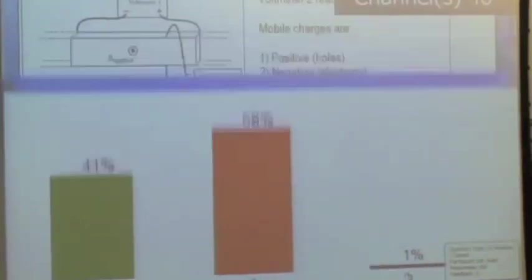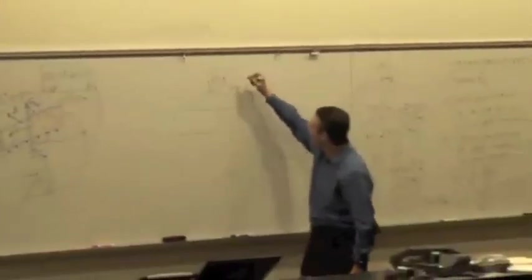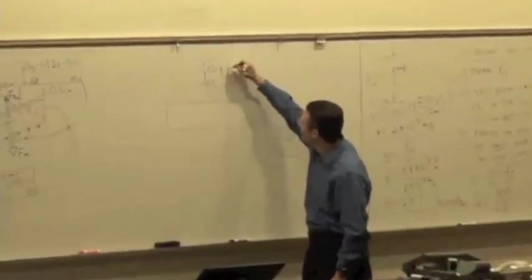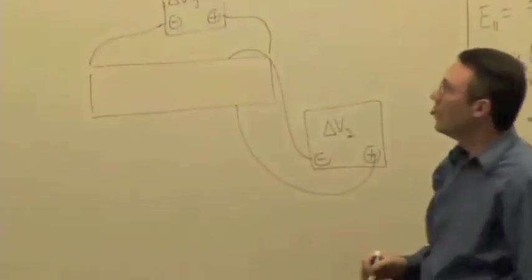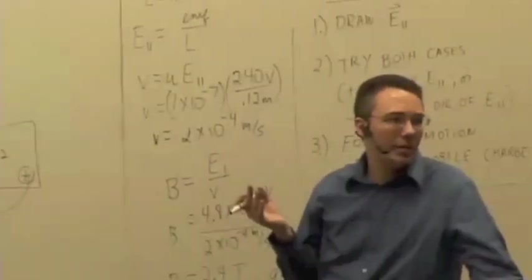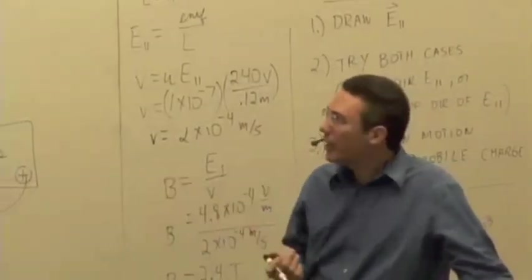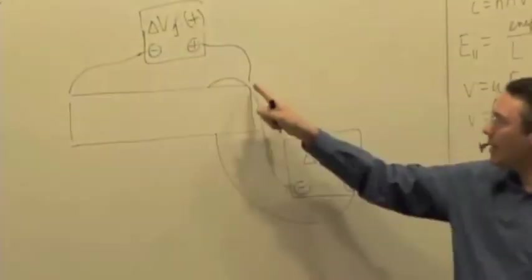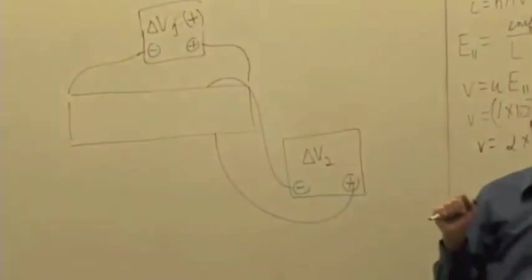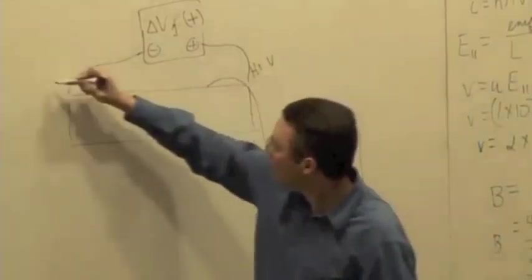Bare majority for answer number 2. So how would you figure this out? The first thing you have to figure out is the direction of E parallel. We're told something about the voltmeter reading — it is positive. The rule for a voltmeter: if the positive terminal is connected to the higher potential, it reads positive. This is reading positive, so which end is at the higher potential? The right. So we have the high potential on the right, low potential on the left.